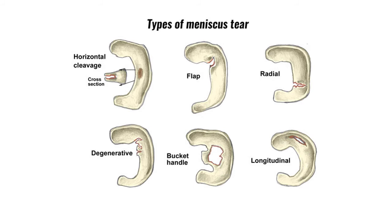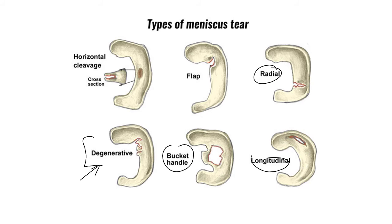Some other types of meniscus tears — here's a degenerative one, which is more common. You see some degeneration where the condyle of the femur has been rubbing against that for a person's whole life — maybe 60 years old with a little bit of degeneration in the meniscus. There's also a bucket handle tear, a longitudinal tear, a radial tear, a flap coming from a horizontal or radial tear, and a horizontal cleavage where in cross section you have a piece torn out of the middle.